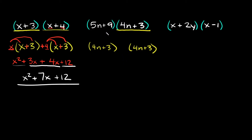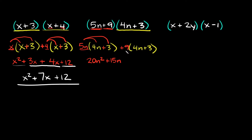Since we wrote (4n + 3) twice, now we go to the other parentheses and split 5n and +9, multiplying each by (4n + 3). So we'll take 5n here and plus 9 right there. Distributing: 5n times 4n is 20n squared — because 5 times 4 is 20 and n times n is n squared — and then 5n times 3 is 15n. Since there's a plus sign, bring that straight down. Then 9 times 4n is 36n, and 9 times 3 is 27. Bring those straight down as well.